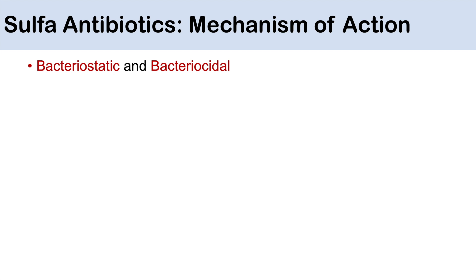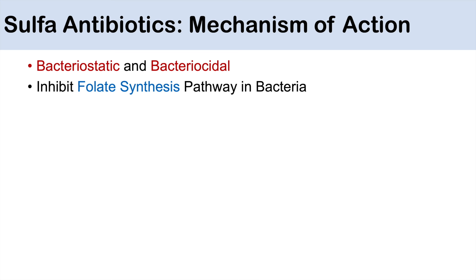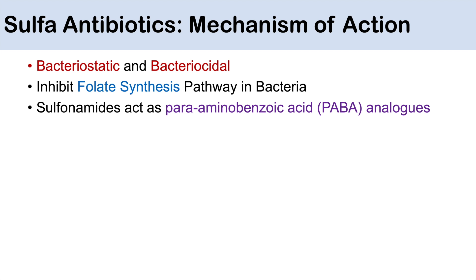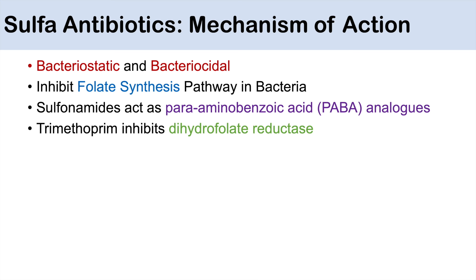What is the mechanism of action of trimethoprim-sulfamethoxazole? When we combine these two drugs, they have both bacteriostatic and bactericidal properties, and they are both involved in inhibiting the folate synthesis pathway in bacteria. Sulfonamides like sulfamethoxazole act as para-aminobenzoic acid, or PABA, analogs.